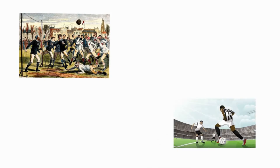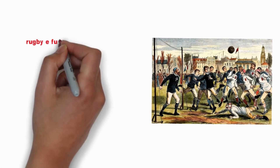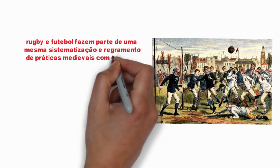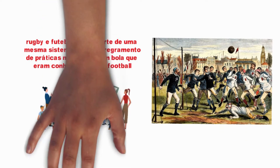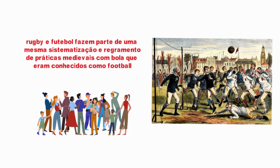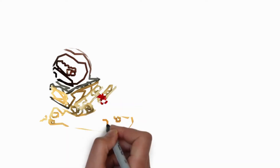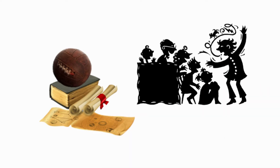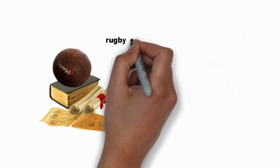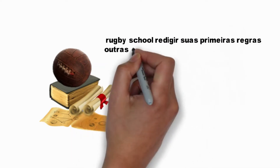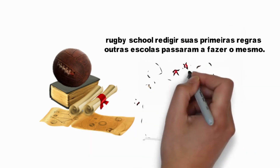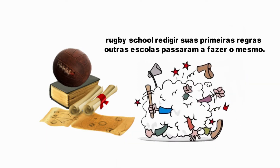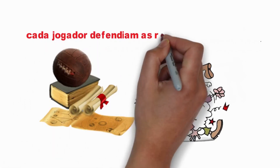O futebol praticado na época de Will não era o mesmo futebol moderno que vemos hoje. Tanto o rugby quanto o futebol fazem parte de uma mesma sistematização e regramento de práticas medievais com bolas, que naquela época era conhecido como futebol. Essas práticas foram incorporadas nas escolas das ilhas britânicas com o objetivo de maior estabilidade nas relações sociais dos estudantes. As primeiras regras do esporte surgiram por volta de 1845. Anteriormente a esse período, as regras eram passadas de forma oral, e cada escola tinha suas próprias regras.